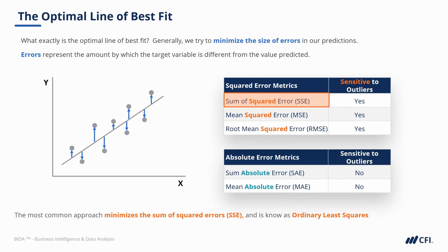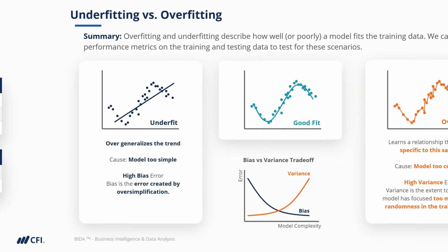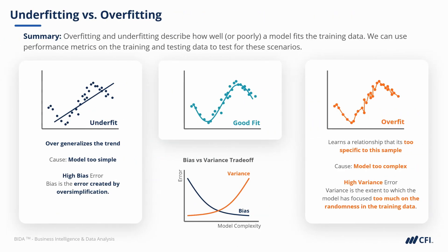In our regression chapter, we learnt how to create that line of best fit, and that ultimately the goal is to minimise the amount of error to our data points. We explored the concepts of overfitting and underfitting, and how we measure the performance of our model.